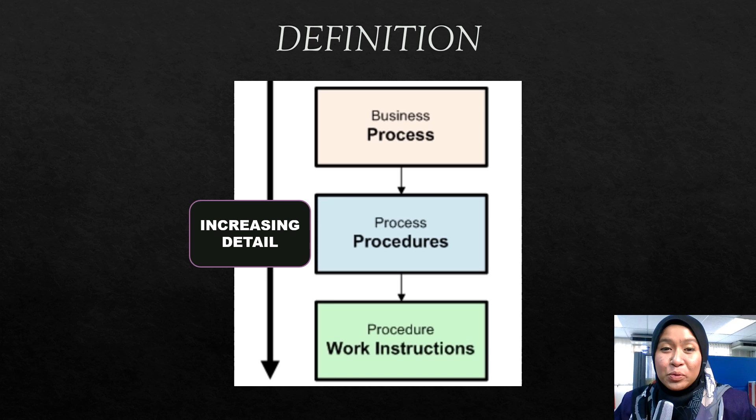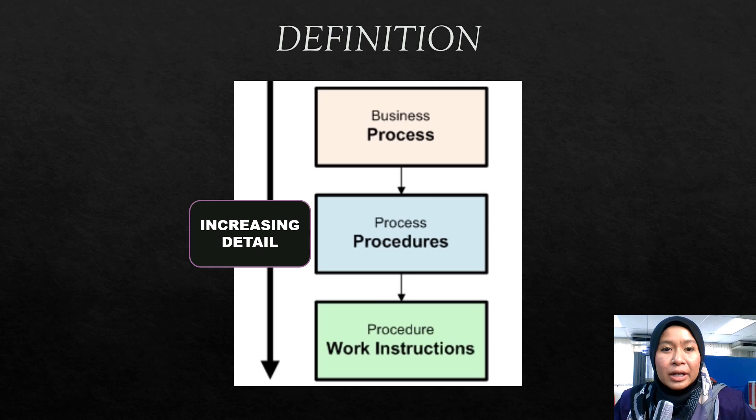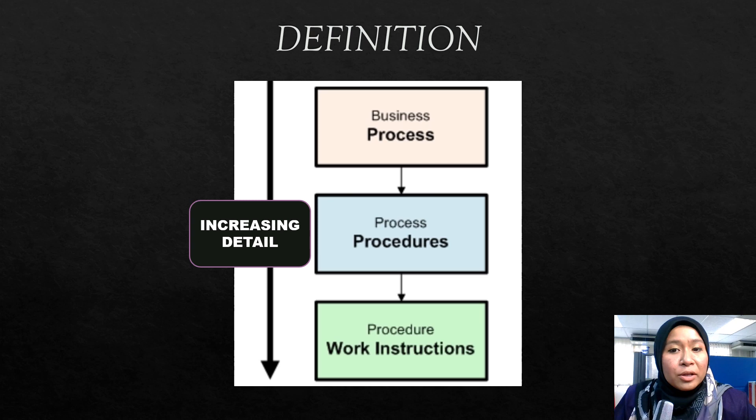Based on the movie clip, we know that process, procedure, or instruction is very important in a workplace. A process is the conversion of an input into an output. A process typically operates at a higher level, possibly across many functions and may cross department lines. A process may contain one or more procedures and may refer to procedures from other processes. Work instructions provide even more detail for a procedure.